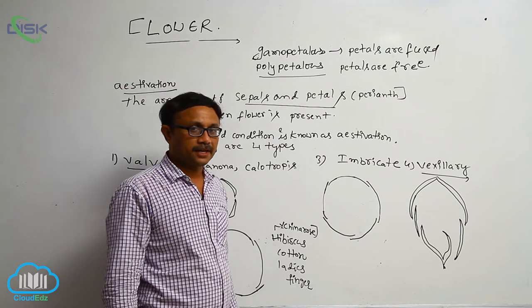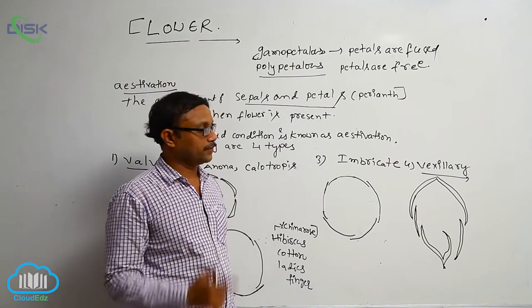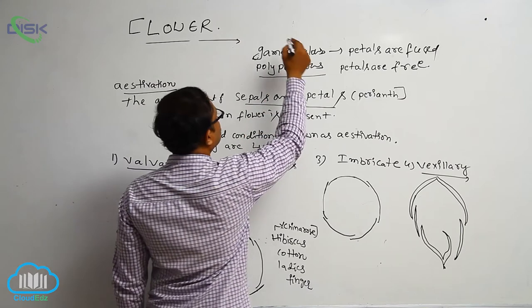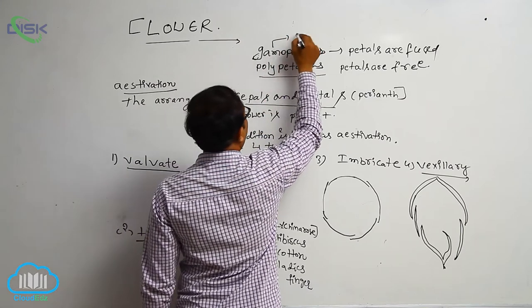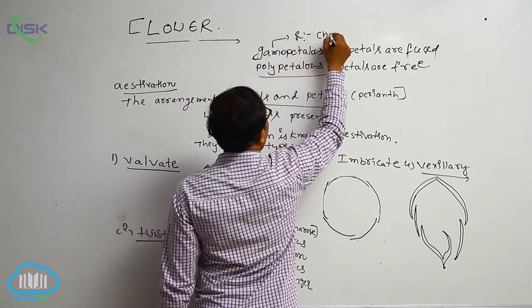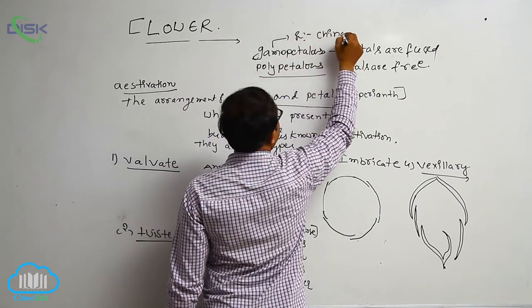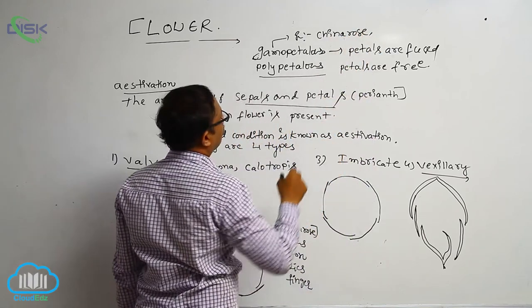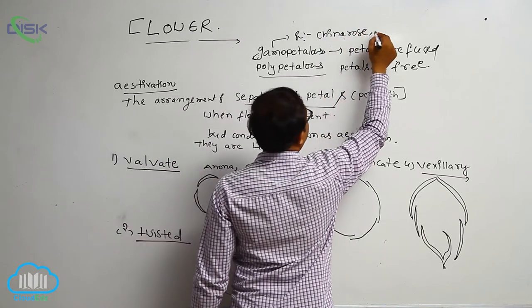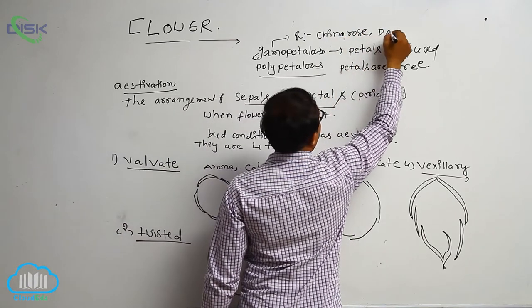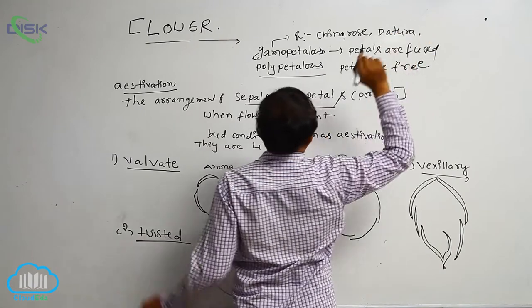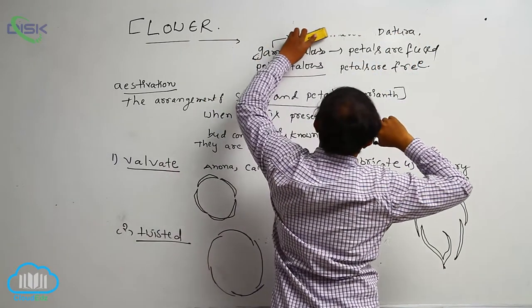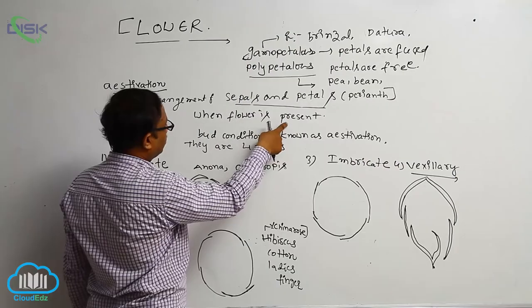For example, in gamopetalous we observe China rose. Another example is Datura. China rose and most of the Solanaceae family plants show the gamopetalous condition.